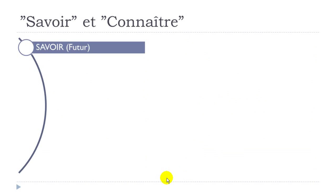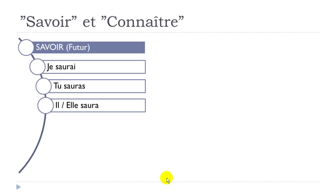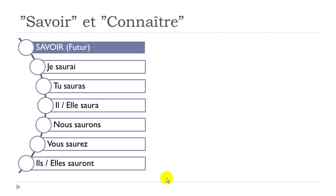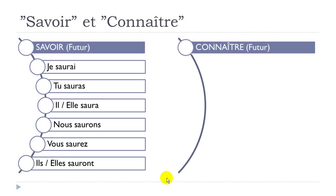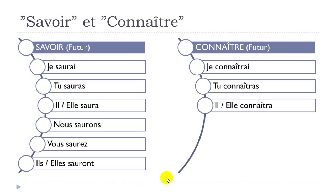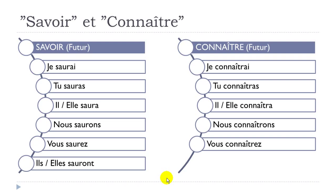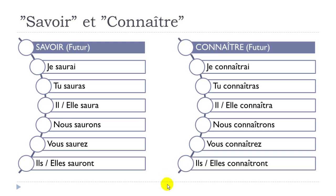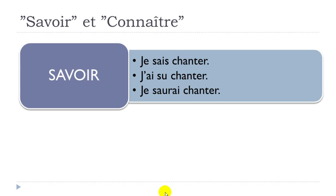For the future form, as introduced in Unit 6: Savoir goes je saurai, tu sauras, il saura, elle saura, nous saurons, vous saurez, ils sauront, elles sauront. And Connaître in the future: je connaîtrai, tu connaîtras, il connaîtra, elle connaîtra, nous connaîtrons, vous connaîtrez, ils connaîtront, elles connaîtront.